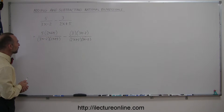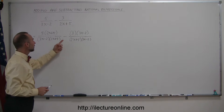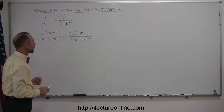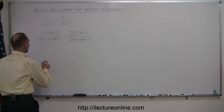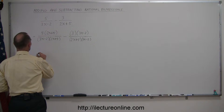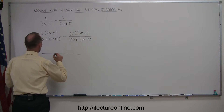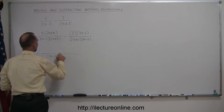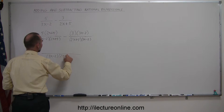No mistake so far. Now you can see that the denominator is the same — we can write it as a product of two binomials. So this is equal to everything written over the common denominator: 3x minus 2 times 2x plus 5.